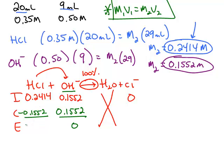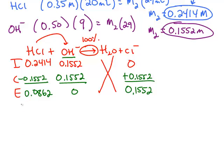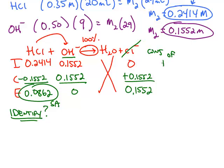And the hydrochloric acid that's left, 0.0862. The chloride that's made, 0.1552. So just like in the past, you want to identify what kind of chemical or chemicals you have. We still have some strong acid. The strong base has all been neutralized. And we have chloride. Chloride is the conjugate of hydrochloric acid, which means chloride is not an acid and it's not a base, so we can ignore it.